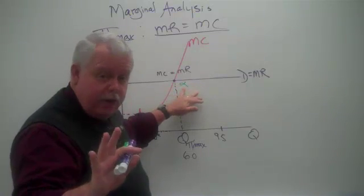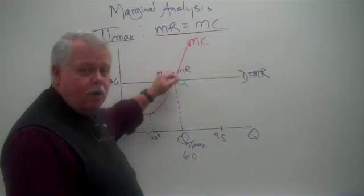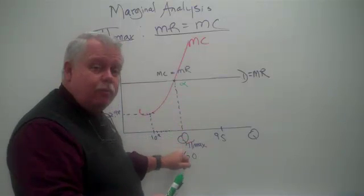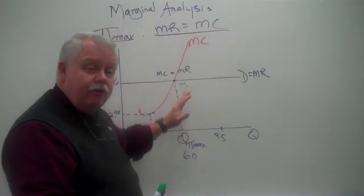And remember the litany here. Find alpha. Marginal cost intersect marginal revenue. Alpha tells us the quantity to produce. Alpha tells us quantity.